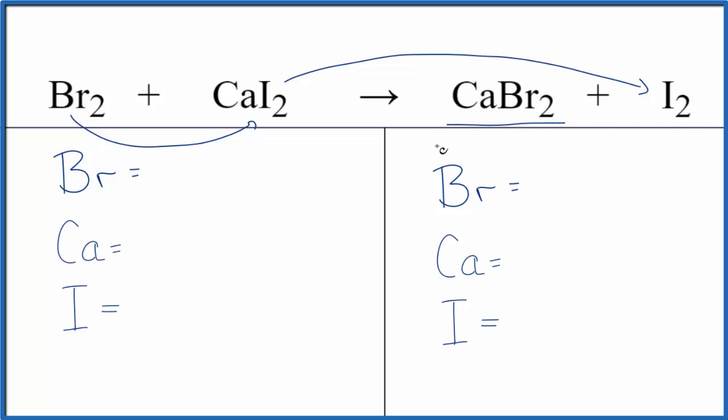So this is a single displacement reaction. To balance the reaction, let's count the atoms up. That looks like this. If you look at the coefficients here, they're the same on each side. So this reaction, it's already balanced. We don't need to do anything.